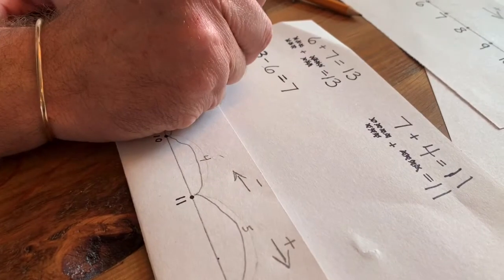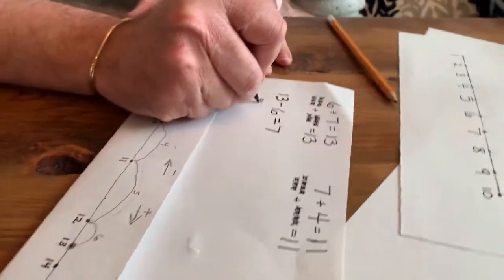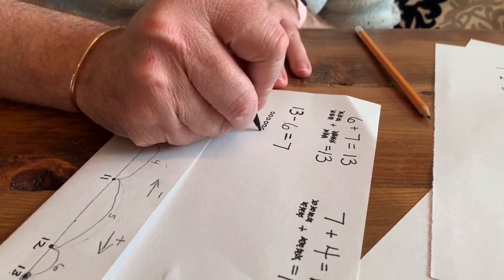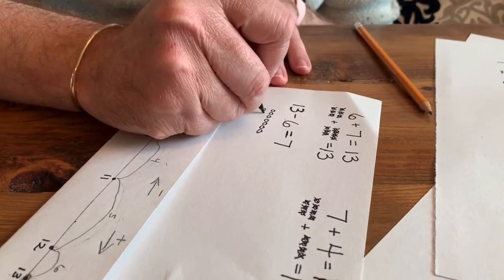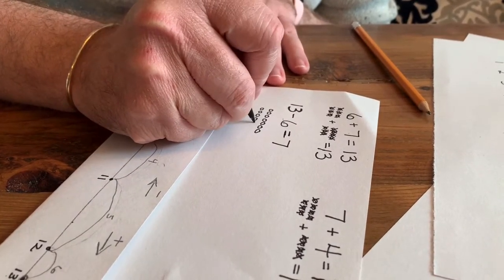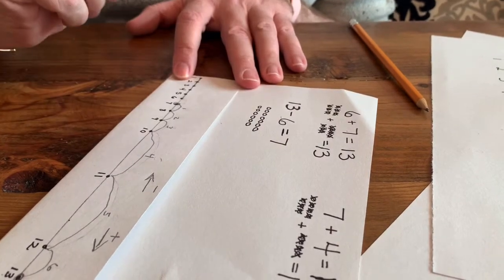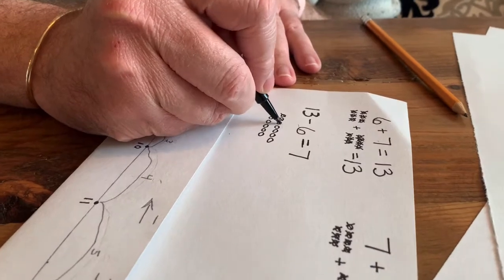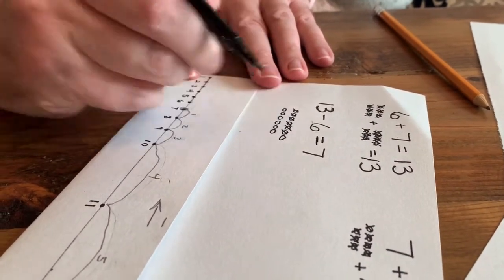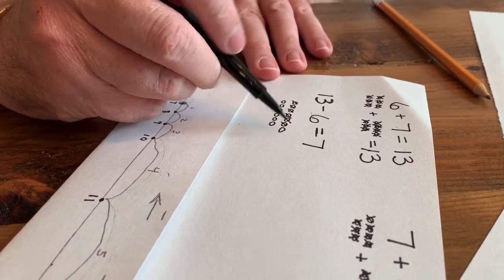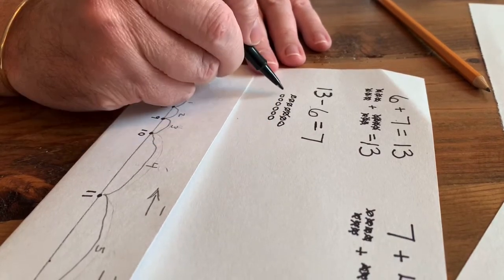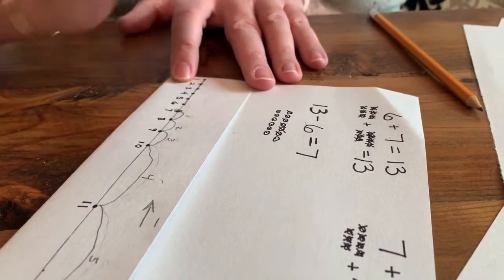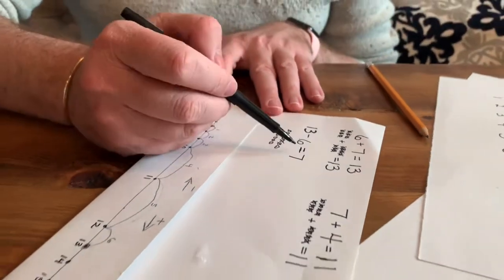I'm going to do a pictorial just to make sure. So I'm going to do 1, 2, 3, 4, 5, 6, 7, 8, 9, 10, 11, 12, 13. And I'm going to take away 6. 1, 2, 3, 4, 5, 6. And count how many I have left. 1, 2, 3, 4, 5, 6, 7. So 13 minus 6 is 7.